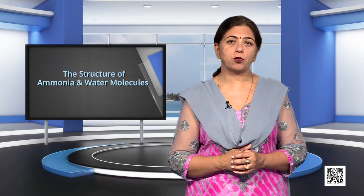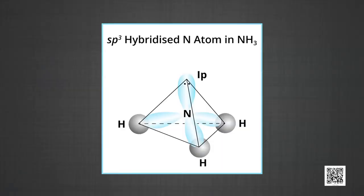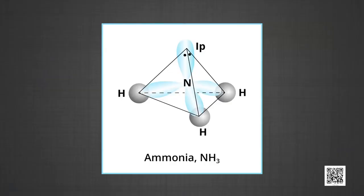The structure of ammonia and water can also be explained with sp³ hybridization. In ammonia, the outer electronic configuration of nitrogen in the ground state is 2s² 2px¹ 2py¹ 2pz¹, having three unpaired electrons. Three sp³ hybrid orbitals overlap with the 1s orbital of hydrogen atoms to form three N–H sigma bonds, while a lone pair of electrons occupies the fourth sp³ hybrid orbital. The repulsion between the lone pair and the bond pairs is greater than between two bond pairs, so the molecule gets distorted and the bond angle is reduced to 107° from 109.5°, giving a pyramidal geometry.